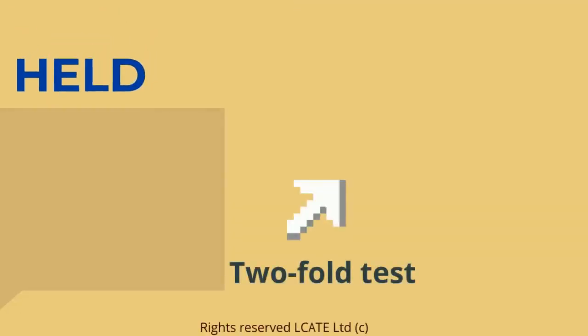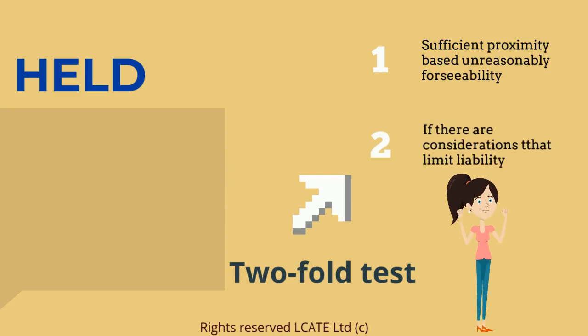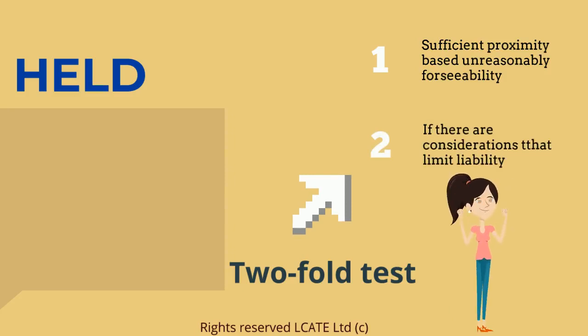This case formulated the two-fold test. If there was sufficient proximity based on reasonable foreseeability, and there was no consideration which would limit liability, then the claimant's claim would be successful. In this case, it was.